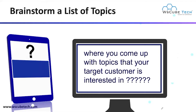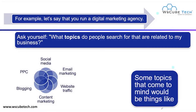You need to come up with ideas that your targeted audience is interested in, and make a list of those topics. Ask yourself: what topics do people search for that are related to your business? For example, if you run a digital marketing agency, people might search for social media, email marketing, website traffic, content marketing, blogging, or PPC-related topics.